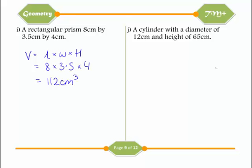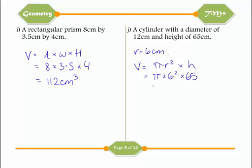A cylinder with a diameter of 12 centimetres has a radius of 6 centimetres. The volume is the cross-sectional area times the perpendicular height: pi times 6 squared times 65, which is approximately 7,351 centimetres cubed. You can give answers to two decimal places or round to the nearest whole cubic unit.